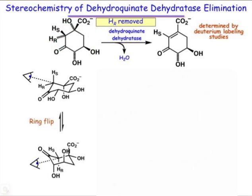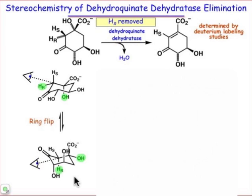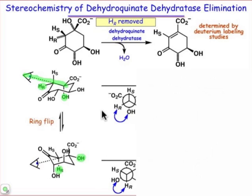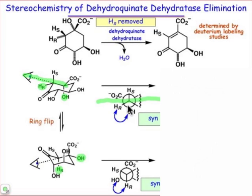So in the one ring-flipped form, the hydroxyl group would be drawn in the axial conformation, and then here it is in the equatorial conformation. The pro-R hydrogen, the one that's removed, here it's in the equatorial, and in the ring-flip form it's in the axial. In both cases, when we look down the carbon-carbon bond which will become the carbon-carbon double bond and draw that Newman projection, the plane of what will become the double bond is drawn there. And you can see that HR and OH are on the same side. That's the syn elimination pathway.